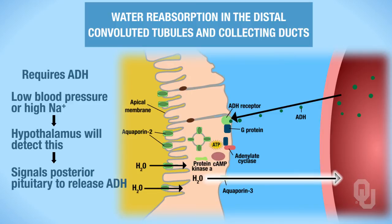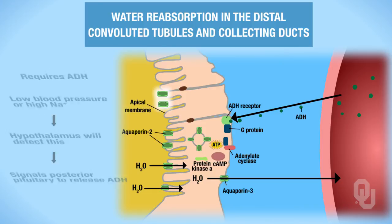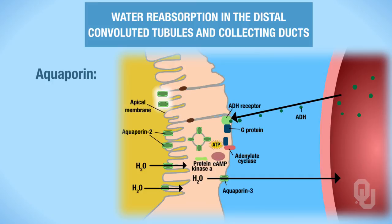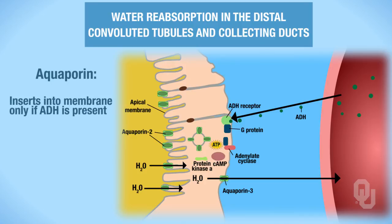Don't worry about the aquaporin numbers — there's aquaporin 2, aquaporin 3 — but you need to understand what an aquaporin is and how it gets inserted into the membrane. The only way the aquaporin is going to get inserted into the membrane is if ADH is present. If there's no ADH, the cell is impermeable to water and you won't be able to reabsorb it.